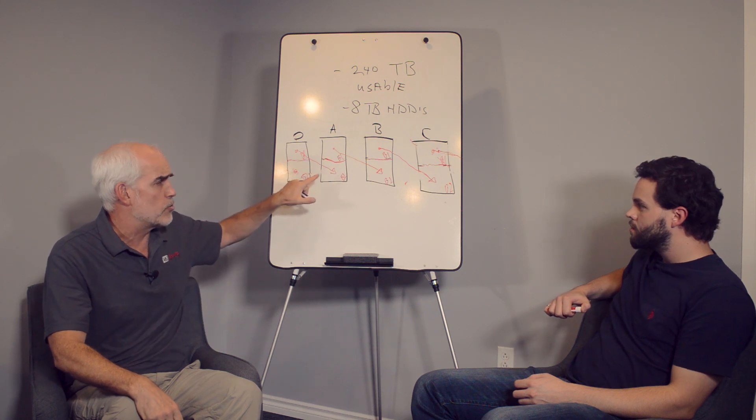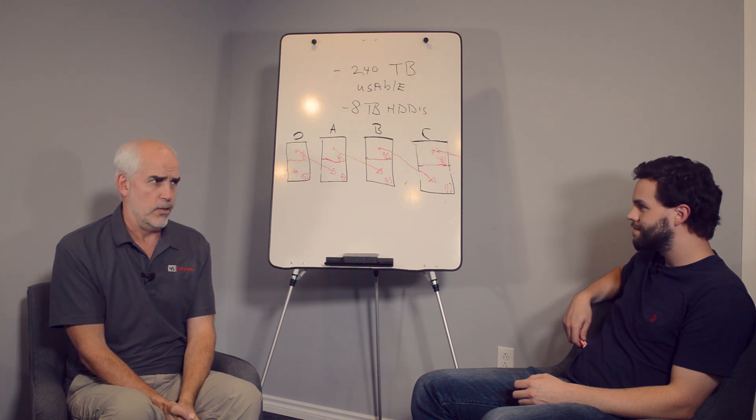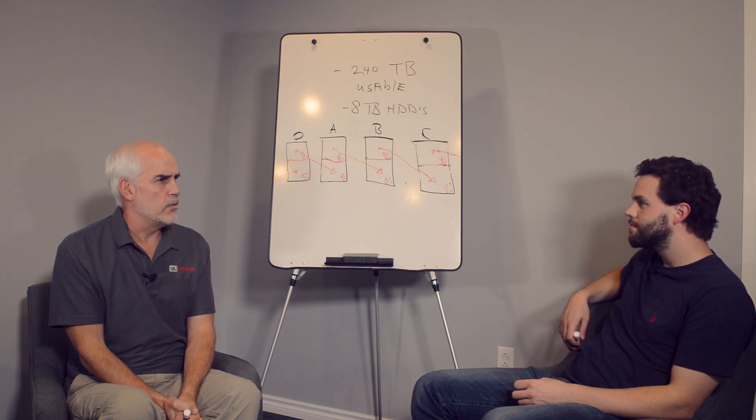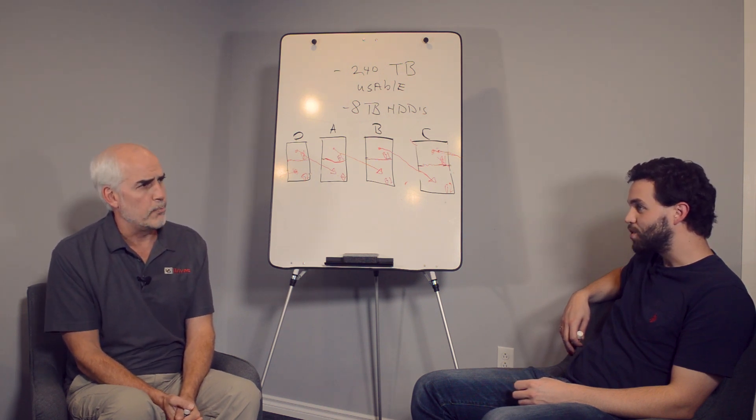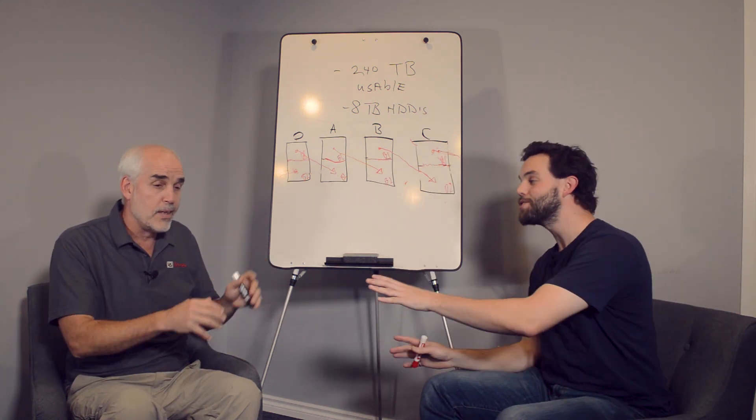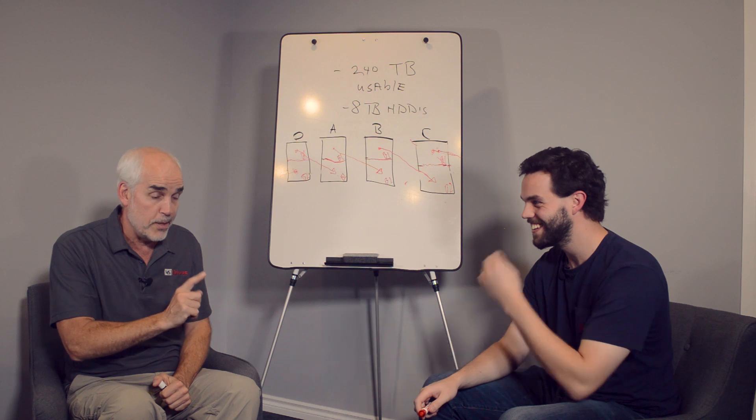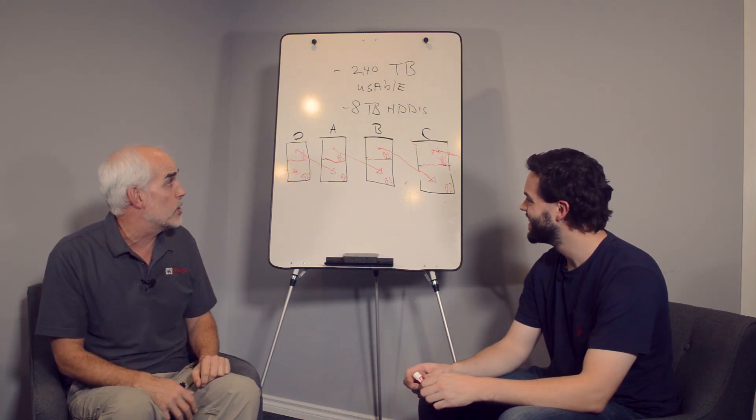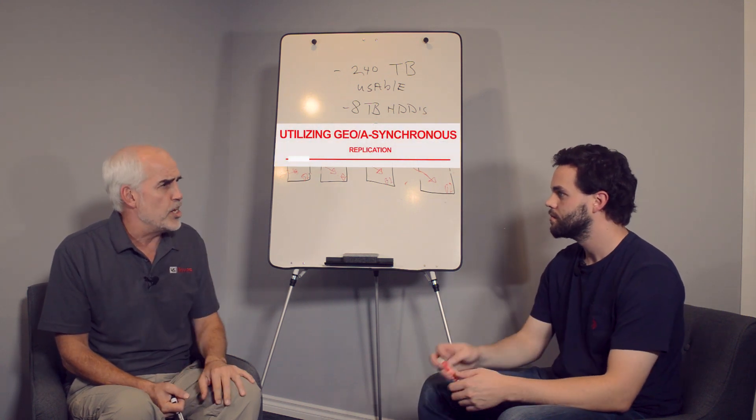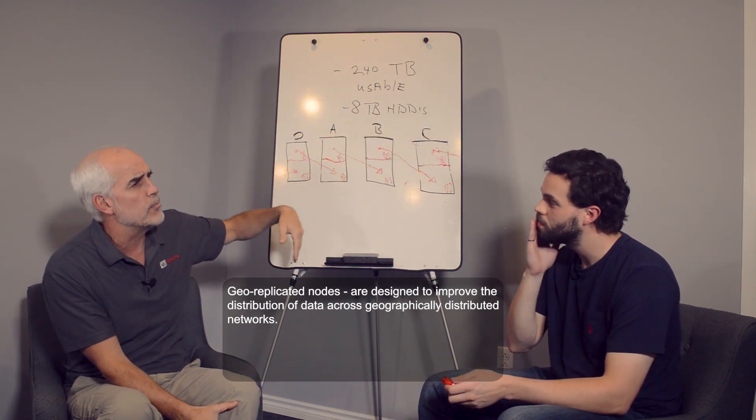Along comes the boss again and says this is extremely valuable data. What happens if a meteorite strikes? There's a meteor shower coming up in August. You know, that's what you want to say, but you don't say that to the boss. There's a meteor shower coming up and he says we gotta make this safe, we gotta put this somewhere else. Geo-replication, asynchronous replication. I have about 400 terabytes of capacity, 400 terabytes usable, and I want to geo-replicate.